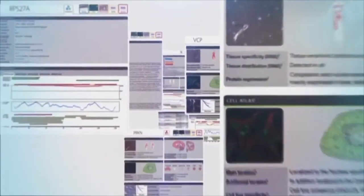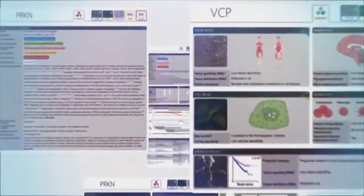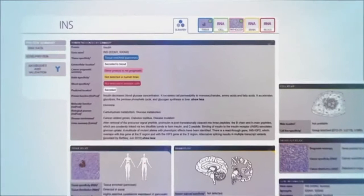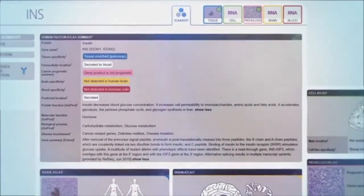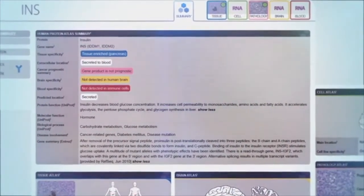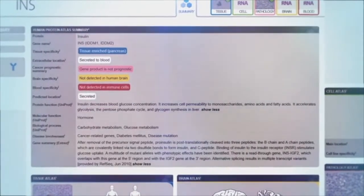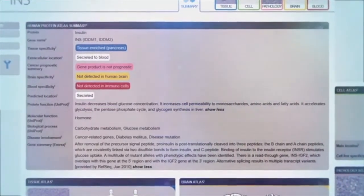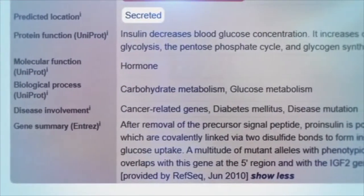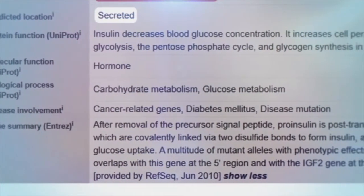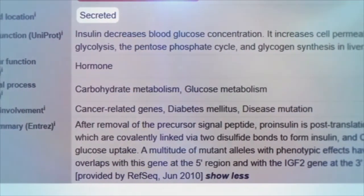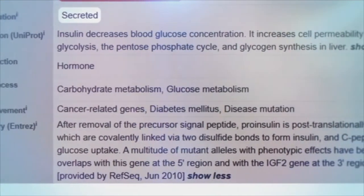For each protein, a page has been created to allow researchers to get a summary of the information gathered by the content of the different parts of the human protein atlas. For example, the information for insulin involved in diabetes is shown here. The summary page also gives information about the function of the protein and if the protein is involved in any human disease.